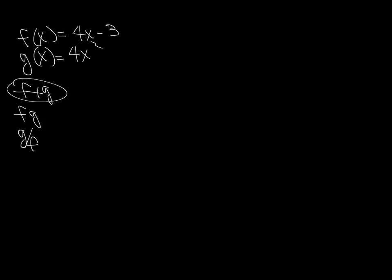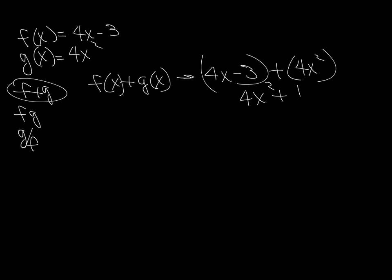Let's go ahead and look at example number 2. F of x equals 4x minus 3, and G of x equals 4x squared. They're asking us to find F plus G, FG, and G over F. So let's go ahead and find the F plus G first. That will be 4x minus 3 in parentheses plus whatever G of x is, 4x squared. Adding those together, can't really do much to it except rearrange it in the right order, and you get 4x squared plus 4x minus 3.